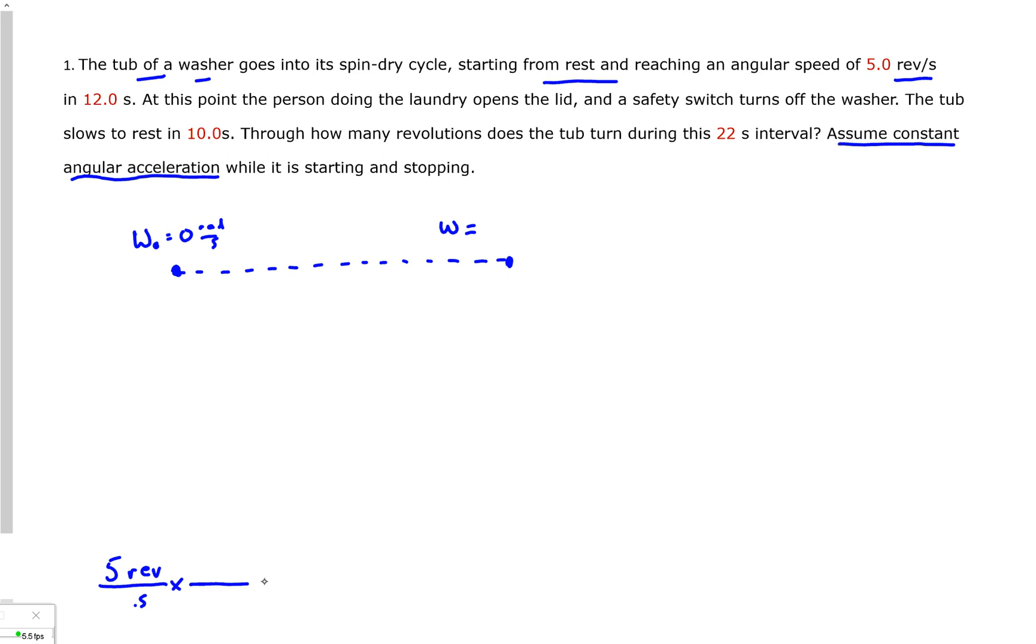5 revs per second times, there's 2 pi radians per 1 rev. So that's 10 pi. But I would really kind of like this in terms of normal units. So pi is 3.14, so this is 32.8 rads per second.